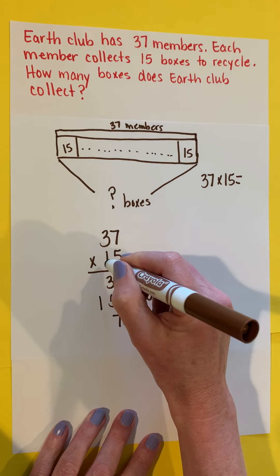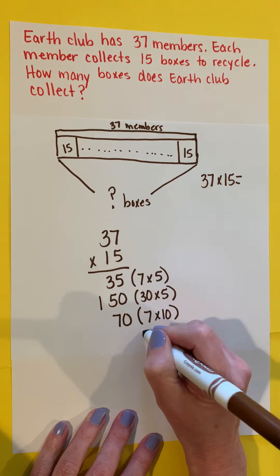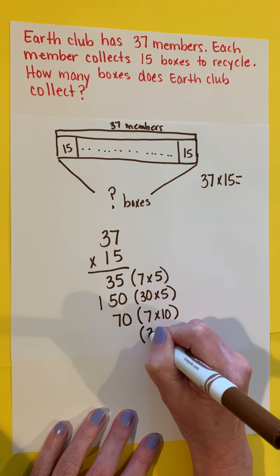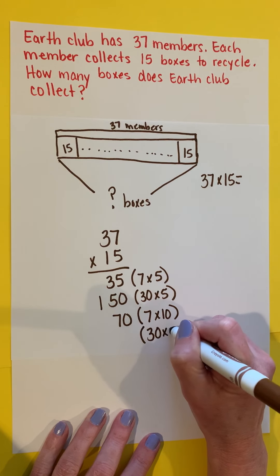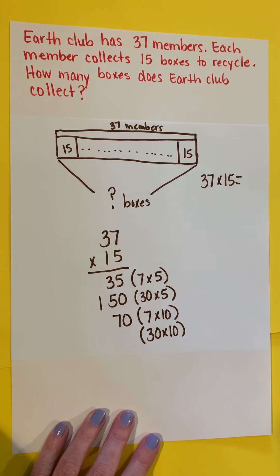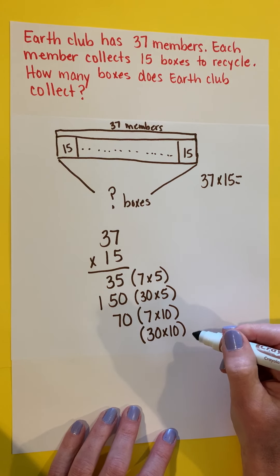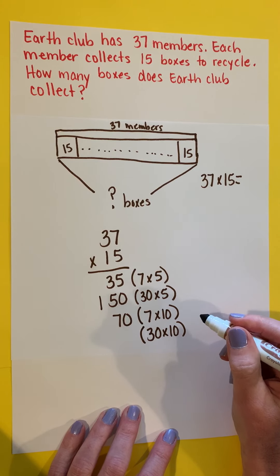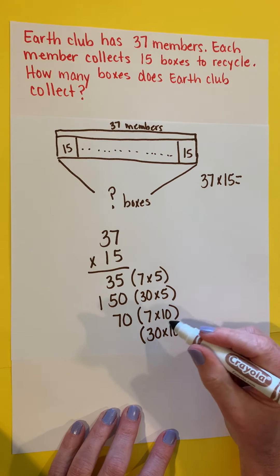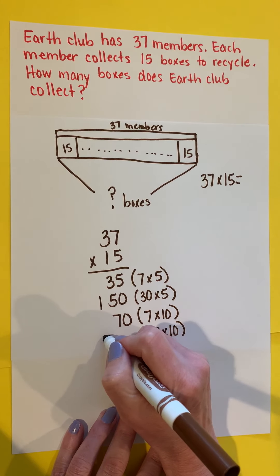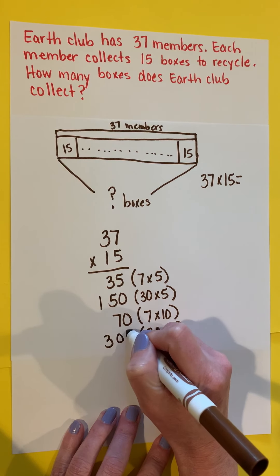And then I'm going to take 10 multiplied by that 30, or 30 multiplied by 10. And there's one of those times when I want to think three tens times one ten. Tens times tens gives me hundreds, and three multiplied by one gives me three. So that's three hundreds.